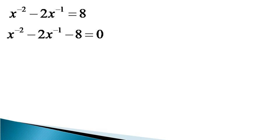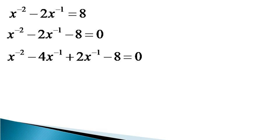This quadratic equation in x raised to the power minus 1 can be solved through factorization, which we can do by expressing the equation as x raised to the power minus 2, minus 4x raised to the power minus 1, plus 2x raised to the power minus 1, minus 8, is equal to 0.